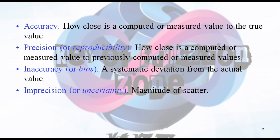In this case, we need to know some other things. Accuracy — how much closer to the exact value we can go. Precision — we can also call it reproducibility. The previous computed or measured value we can do another work with. There are some stages where inaccuracy has to come, meaning we are diverted from actual values. Imprecision — what is it? It is the magnitude of scatter. So all these terms which we need for round-off methods, I will tell you.